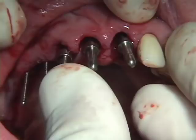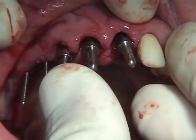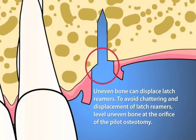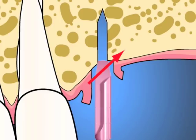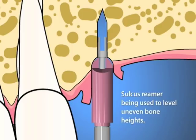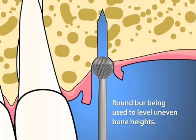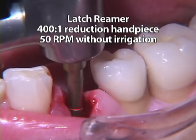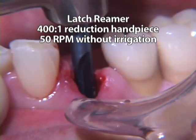While preparing an osteotomy on a slope, the leveling of the uneven heights of bone at the orifice of a pilot osteotomy is advisable to avoid chattering and potential displacement of the wider latch reamers. Leveling may be achieved by rotating a planisher on a 2mm guide pin inserted into the 2mm pilot osteotomy, or alternatively, by using a round burr to even the bone level around the orifice of the pilot osteotomy. The pilot osteotomy is initially widened with a 2.5mm latch reamer and then with successively wider latch reamers in a 400-to-1 reduction handpiece without any irrigation until the diameter of the intended implant is achieved.